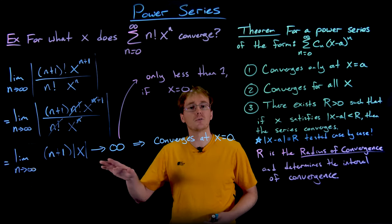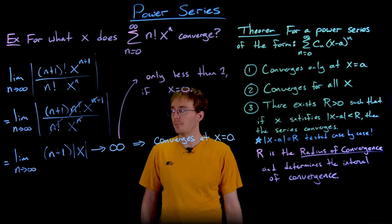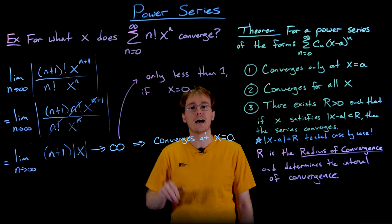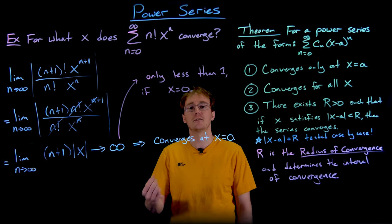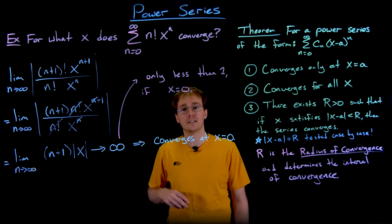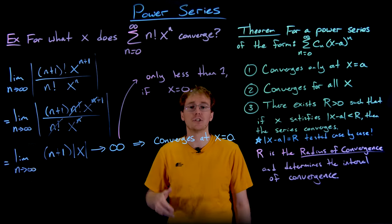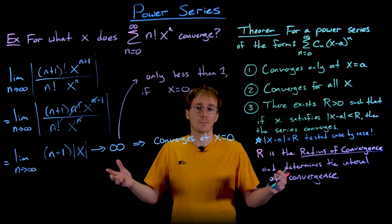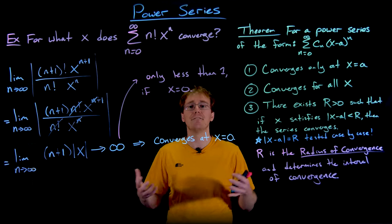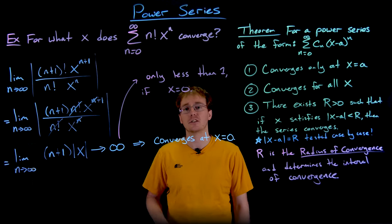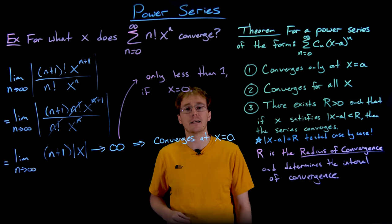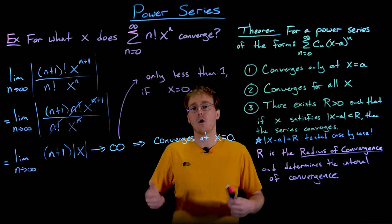What we see here is that when we perform the ratio test, the limit we get is not the radius of convergence itself — it's the reciprocal of the radius of convergence. If our limit goes to infinity, the radius of convergence is 1 over infinity, which is 0. If our limit went to 0, then 1 over 0 approaches infinity, giving us an infinite radius of convergence. That means when the ratio test limit goes to 0, the series converges for all real x values.